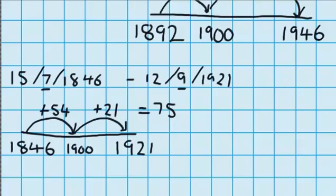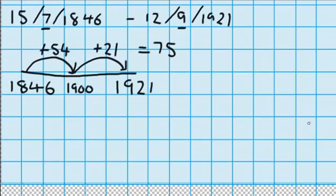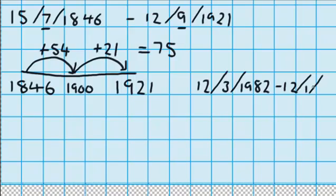Let's try one more, which is a little bit different. Let's try, someone was born on the 12th of the 3rd, 1982. And they died on the 12th of the 1st, 2004.